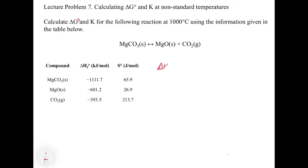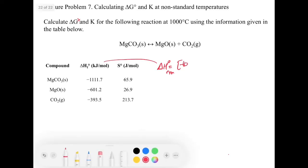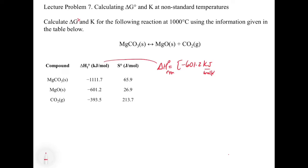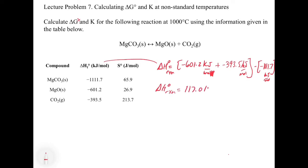To calculate delta H naught for the reaction, we take the products minus the reactants. That's minus 601.2 kilojoules per mole for MgO, plus minus 393.5 kilojoules per mole for CO2, minus the magnesium carbonate at minus 1111.7 kilojoules per mole. This gives us a delta H of reaction equal to 117.0 kilojoules.